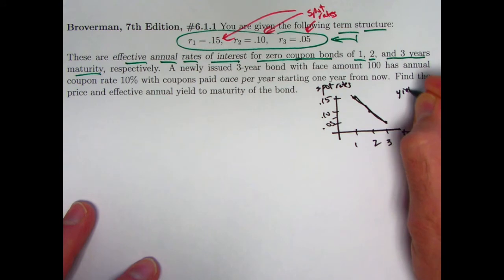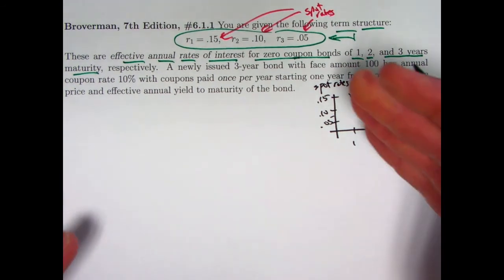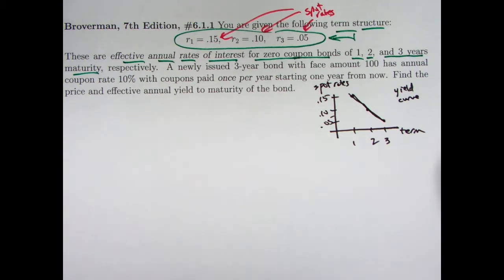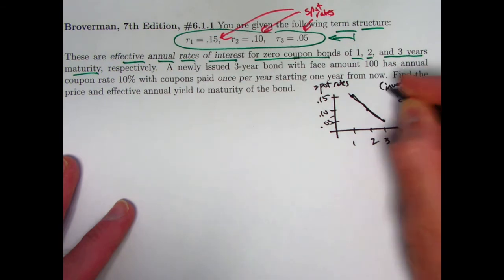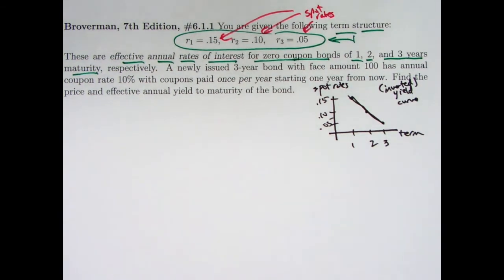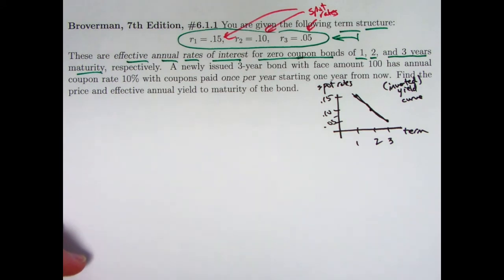This is called a yield curve, and again, this is not typical. Typically, you get an increasing yield curve. This one's decreasing, and in fact, because of that, it's called an inverted yield curve, the fact that it's going down over time. You would typically expect your rates of return on longer-term investments to be larger because you've got more risk involved because of the fact that market conditions can change and inflation can go up and that kind of thing, but that's what we have in this problem.